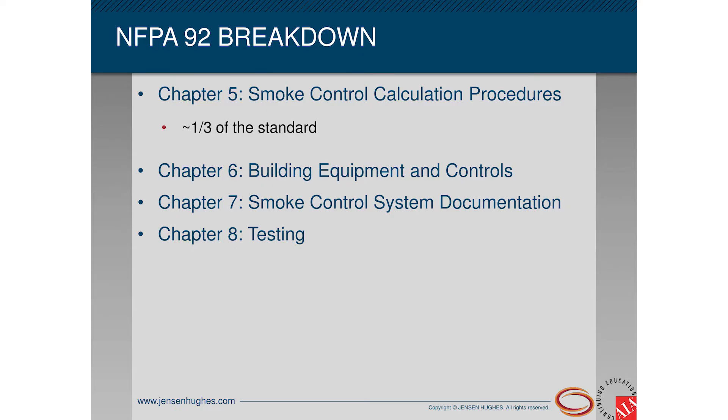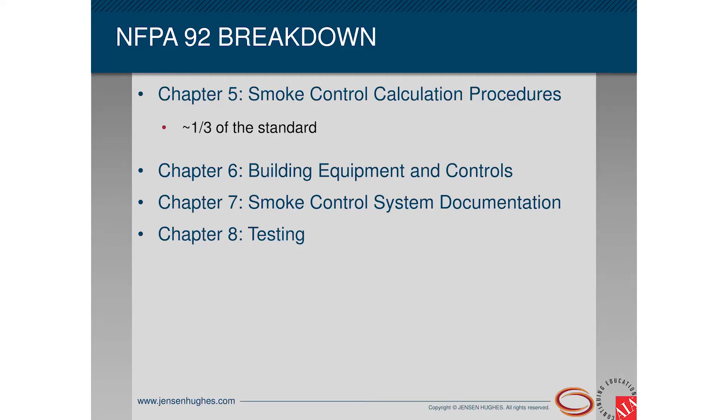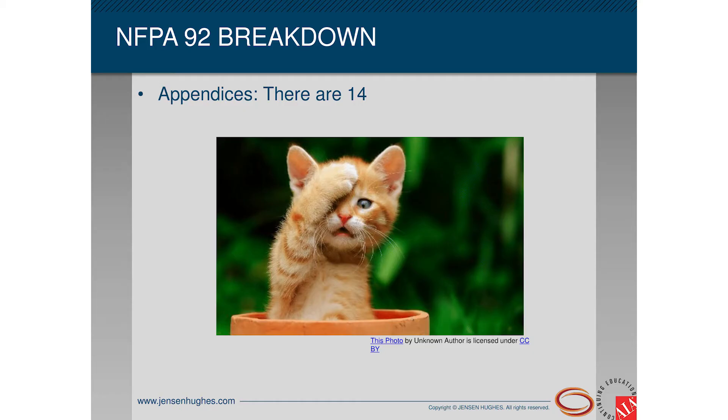Chapter 5 explains all the calculations required for designing a smoke control system — it takes up a full third of those 27 pages, and only designers will really care about it. Chapter 6 goes over requirements for equipment — you can't install just any ducts or fans because they're subjected to heat and smoke, which can be corrosive. Chapter 7 covers documentation requirements for the design, which is very important. Chapter 8 is probably the most relevant to people in this room — it's the chapter on testing. And there are 14 appendices.